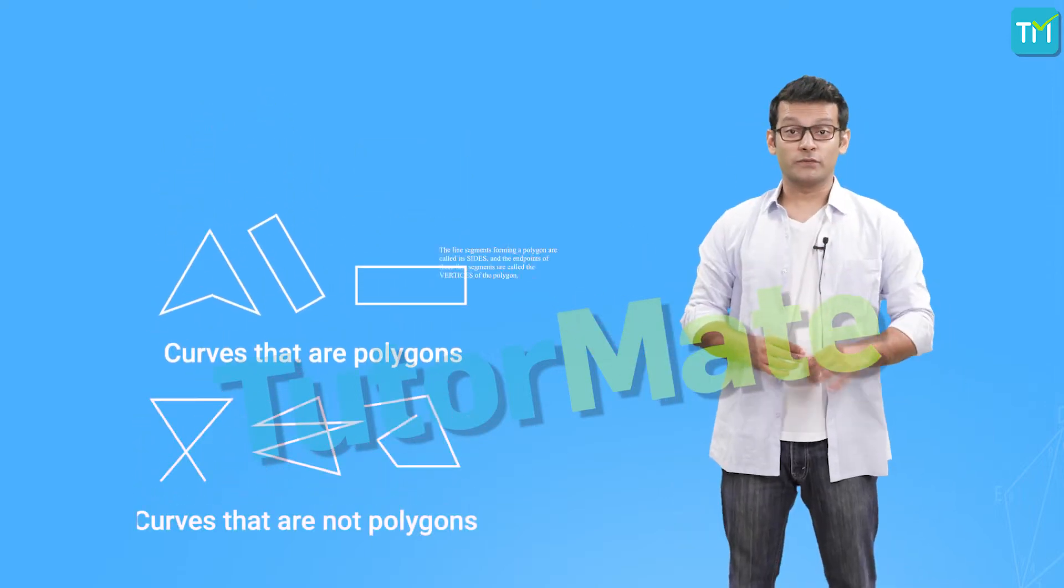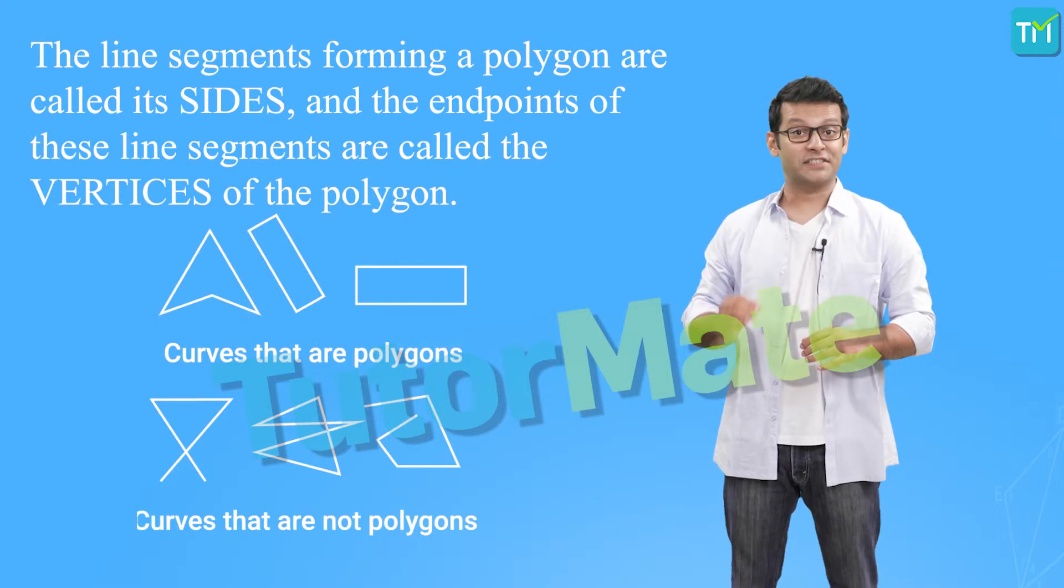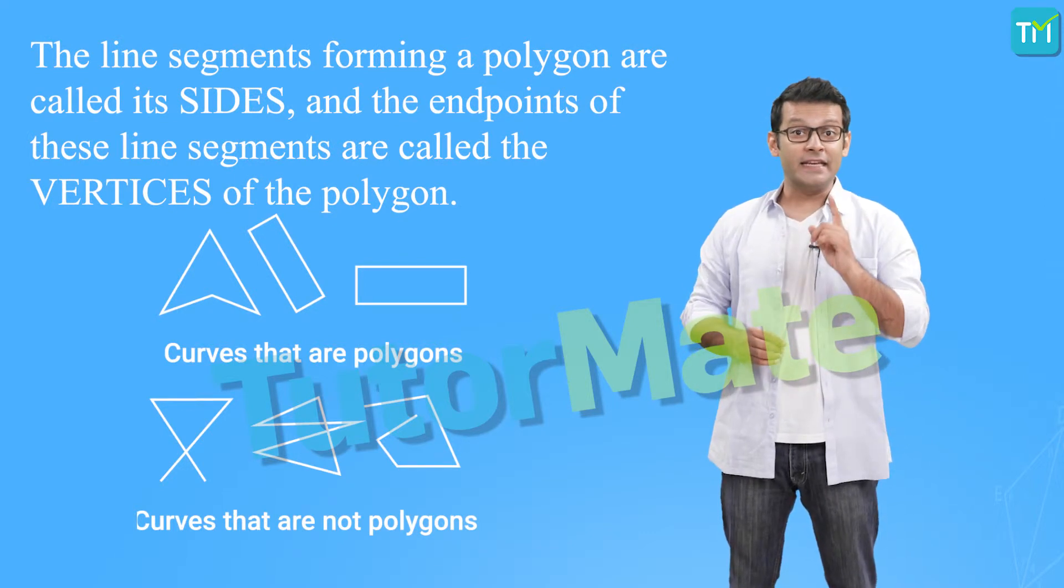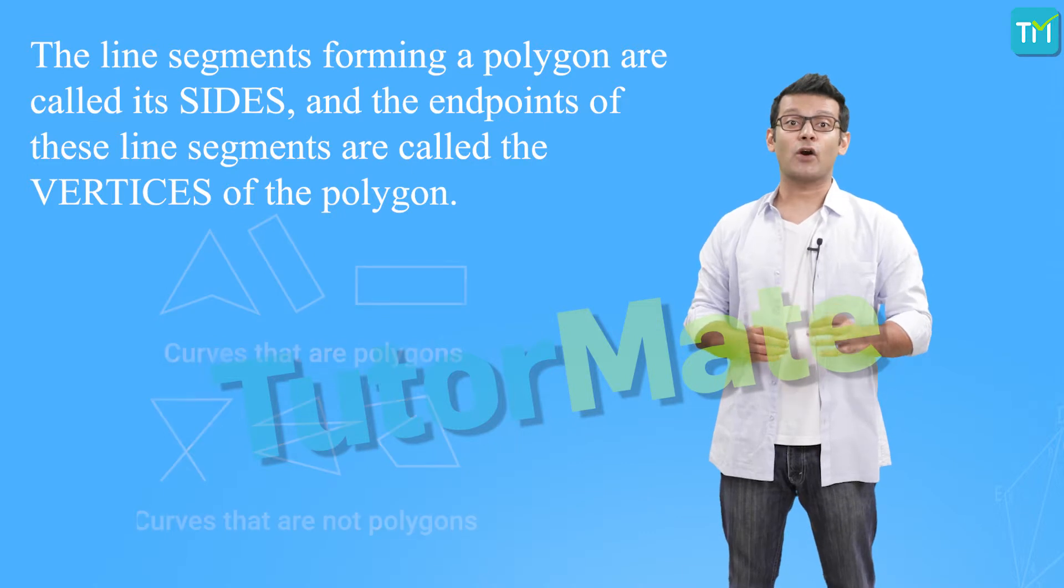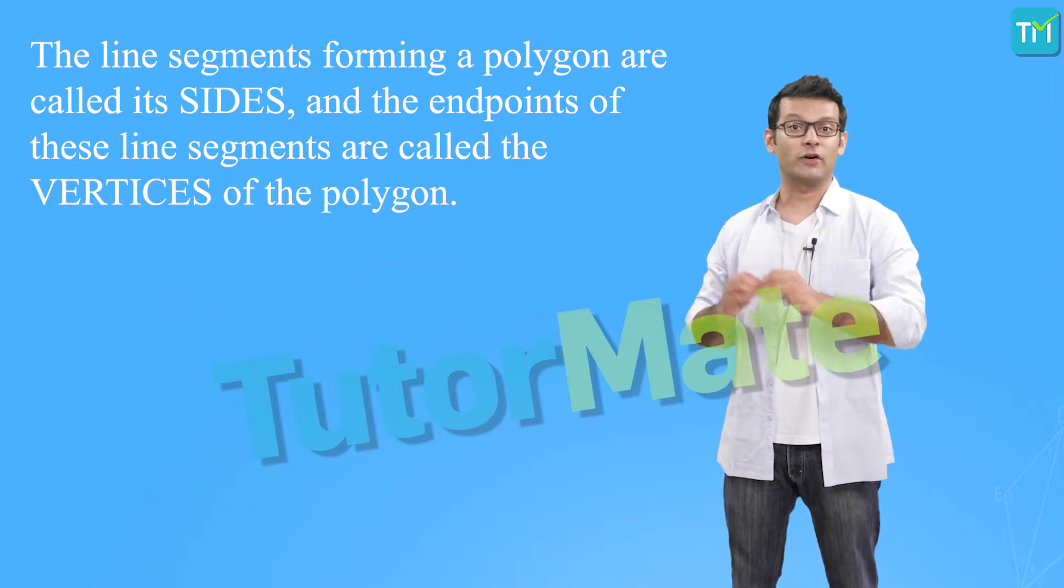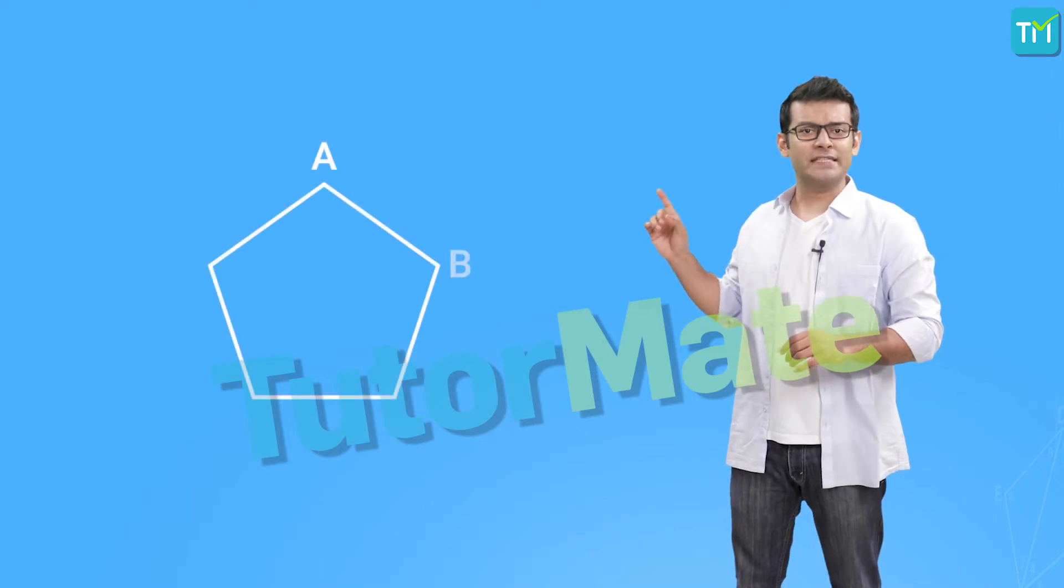Now, the line segments forming a polygon are called its sides and the end points of these line segments are called the vertices of the polygon. Let's say, we have a polygon A, B, C, D, E.